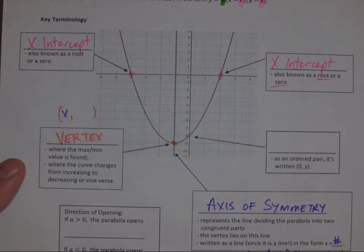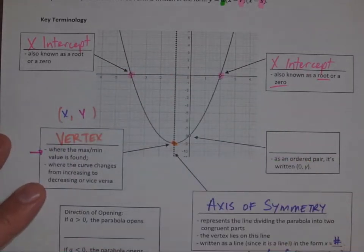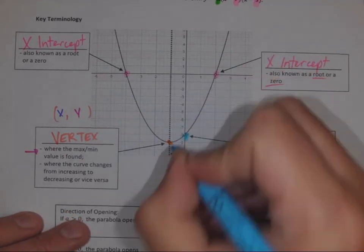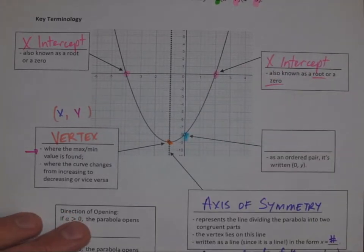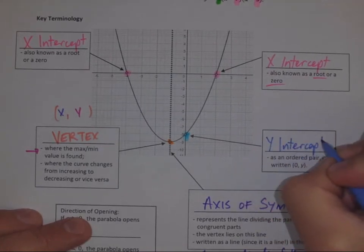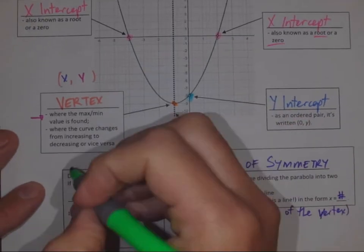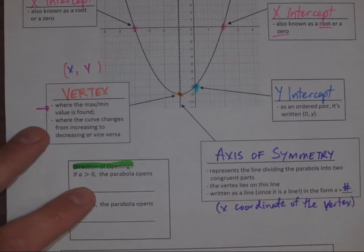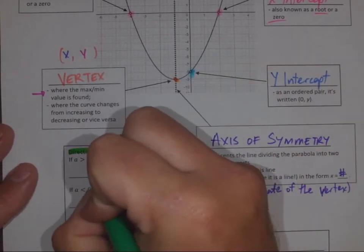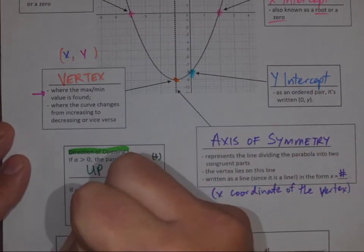The maximum and minimum relate to the y-coordinate of the vertex. We also have the y-intercept, which is the point (0, y). The direction of opening depends on a: if a is greater than zero — positive — it opens up; if a is less than zero — negative — it opens down.